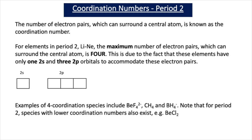In a number of previous topics of both AS and A-level, we've come across the term coordination number. The coordination number is the number of electron pairs which can surround a central atom. Sometimes it's referred to as the number of ligands that can surround a central atom. And in transition metals, we've often used the term coordination number to mean the number of coordinate bonds that form between ligands and a central metal atom.